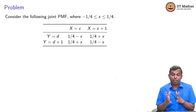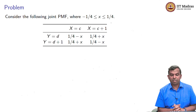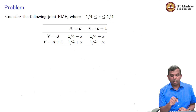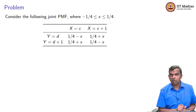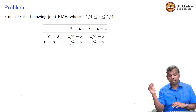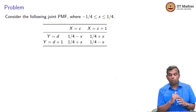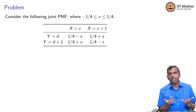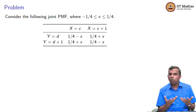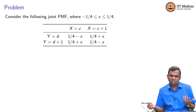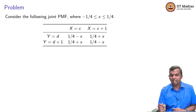Now let us look at a slightly modified version of the previous problem. In the previous problem, we had x equals 0, x equals 1 and y equals 0, y equals 1. I am going to translate it: make x equal to c and x equal to c plus 1, and y equals d and y equals d plus 1, and see what happens to the covariance. We have a sense that the covariance should not change — the variance should not change.